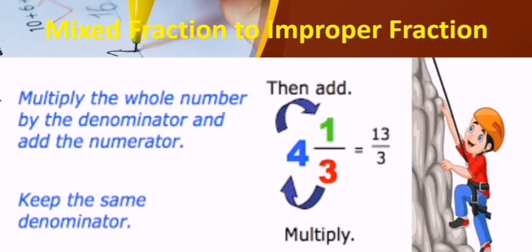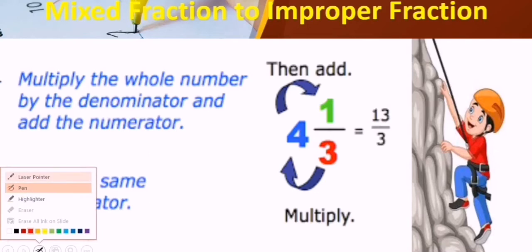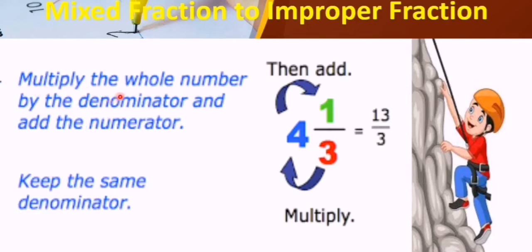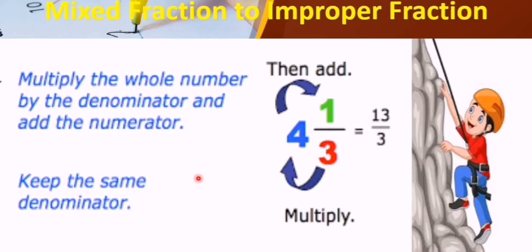Now we learn how to convert a mixed fraction to an improper fraction. First, multiply the whole number by the denominator and then add the numerator. For example, we have whole number 4 and denominator 3. We multiply: 3 times 4 we get 12. Now add the numerator: 12 plus 1 we get 13. The denominator remains the same, so the answer is 13 by 3.